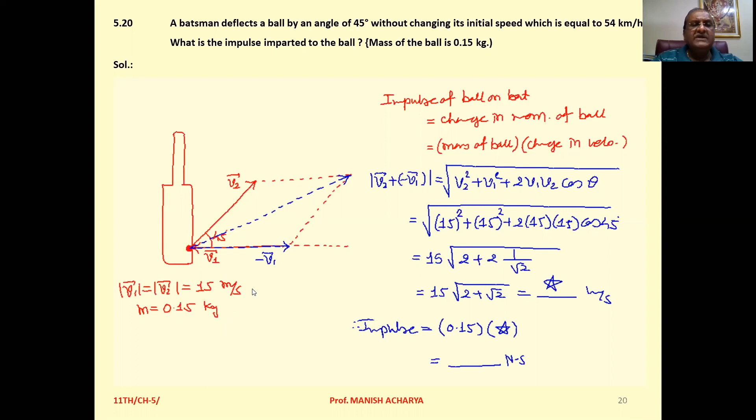Now see, suppose initially ball is moving in this direction, hit the bat and then after move in the direction making an angle 45 degree with initial. So if we take the opposite vector here, then we can write that is minus V1.